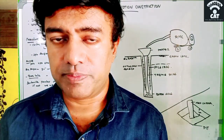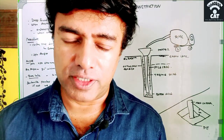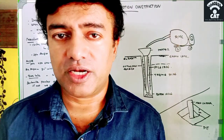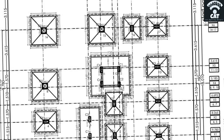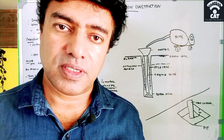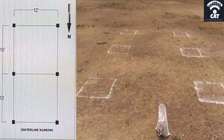Once it is decided that a particular building requires pile foundation, we have to make the centerline drawing for the piles. That drawing will have points marked where the location of each pile will be. Some piles will be single and some will be in a group. All these things will be shown in the drawing, and with reference to the drawing we mark the points on site where the pile will come.